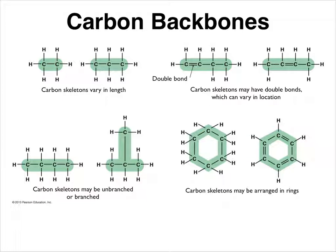Carbon backbones can have single bonds between the carbons — if it ends in '-ane,' like propane, that means all single bonds. They can also have double bonds. If it ends in '-ene,' that means it has at least one double bond — for instance, 'butene.' The position of the double bond is named for which carbons it's between: '1-butene' means the first carbon has the double bond, and '2-butene' means the second carbon has the double bond.